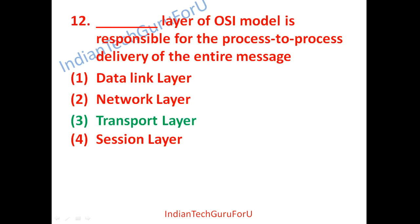Digital Assistant 2019, Question number 12: Which layer of the OSI model is responsible for process-to-process delivery of the entire message? Given answers are data link layer, network layer, transport layer, and session layer. The correct answer is transport layer.